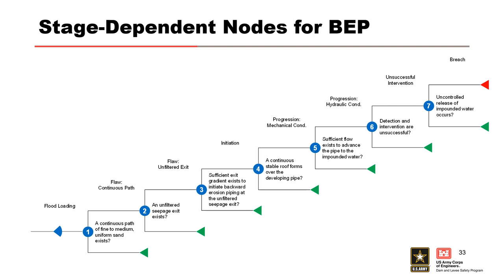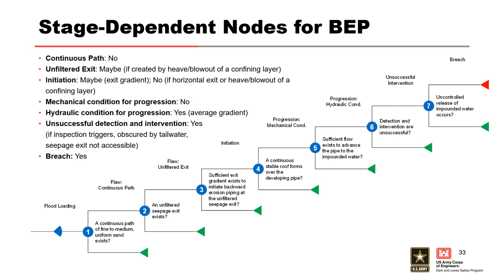In the generic backward erosion piping event tree, a continuous path is a state of nature and is not stage dependent. The unfiltered exit can be a function of stage if it is created by heave or blowout of a cover layer. Initiation is a function of stage for vertical exit conditions but is not a function of stage for horizontal exits where the probability of initiation equals 1, or for heave or blowout of a cover layer, to avoid double counting. Roofing is related to mechanical conditions and is not stage dependent. Average gradient is a function of stage and is used to assess the hydraulic condition for progression. Unsuccessful detection and intervention, and breach, can also be functions of stage as previously discussed.